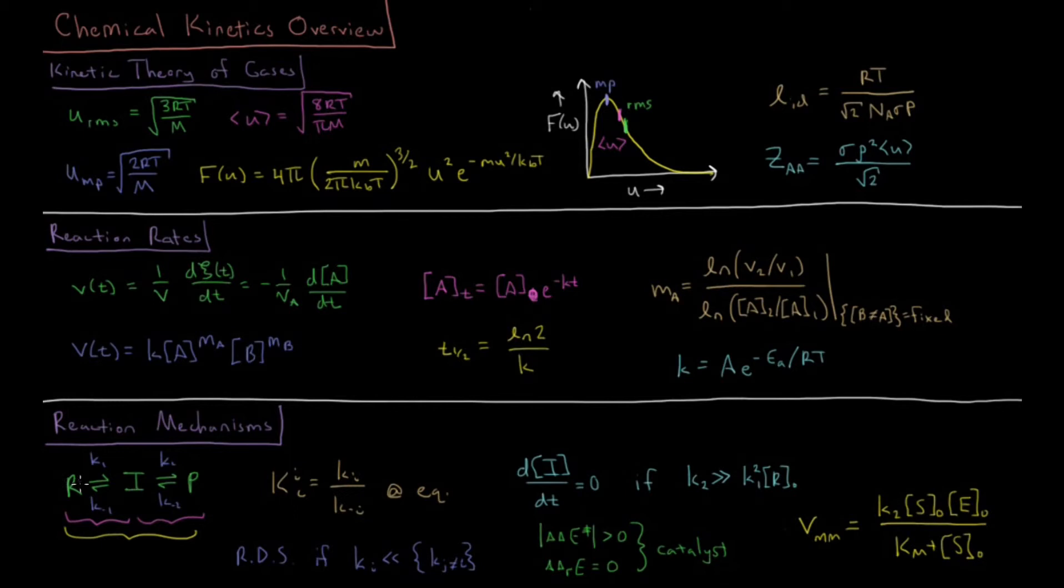If you have one step which has a rate constant which is much, much lower than every other step, then that step can be called a rate determining step. And your integrated rate law overall is going to be primarily determined by that individual step. That's why it's called rate determining since it is much slower and it determines what the rate law and what the integrated rate law is.